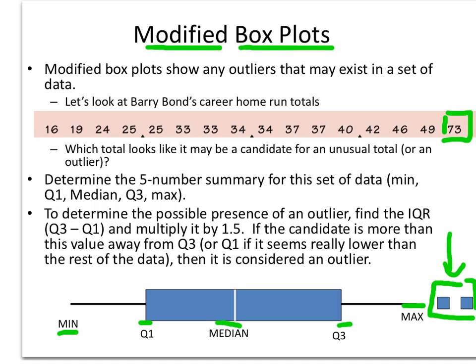So in order to make our box plot we have to determine the five number summary. The minimum here is 16 so we put this at 16. The maximum well 73 but again that could be an outlier so we want to take a look at this.